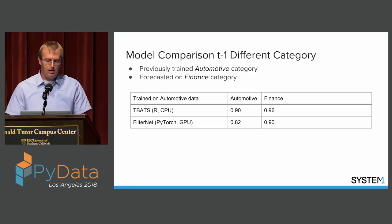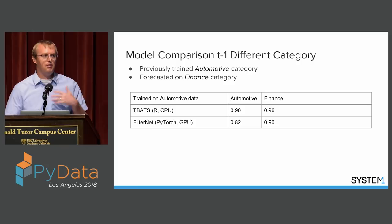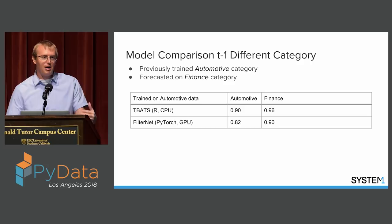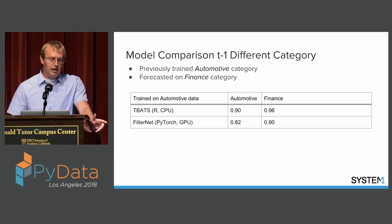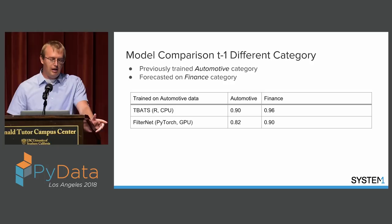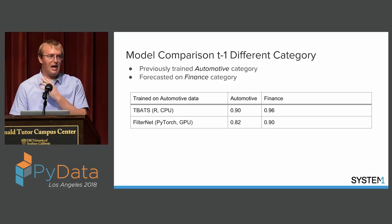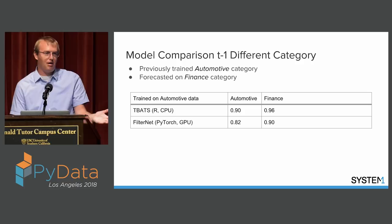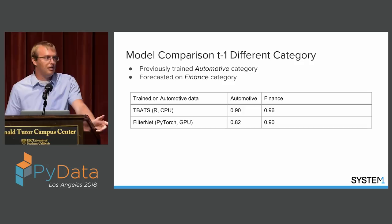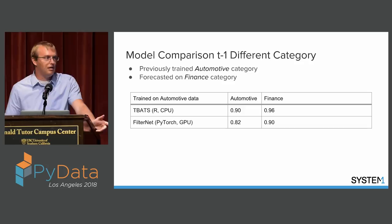The next step was testing how well this model generalizes to unseen data. We often get new traffic sources or partners wanting immediate optimization — it would be great to make an educated guess right out of the gate. We had previously trained on automotive and tested on automotive. We then took that same model trained on automotive and predicted on finance, which it had never seen. Both models performed worse on the unseen category, but the FilterNet still outperformed TBATS and performed about as well as TBATS did on automotive — the category it was actually trained on.